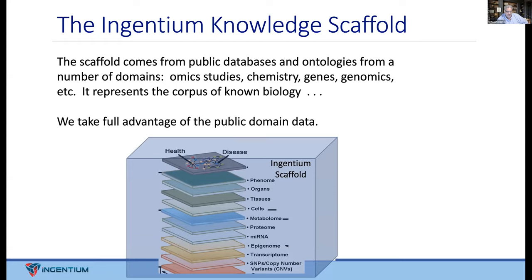At Gentium, when we build a knowledge graph, we actually start with a scaffold underneath the graphs we're going to be building for the projects we work on. We've gone through and looked at all public databases, ontologies, and various other sources to try to get all the underlying nodes and edges we can discover that represent known biology — things like genes, proteins, disease, and biological mechanisms.